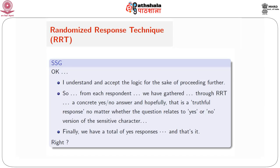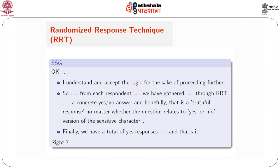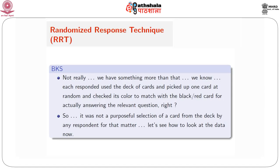I understand and accept the logic for the sake of proceeding further. So from each respondent we have gathered, through Randomized Response Technique, a concrete yes or no answer — and hopefully that is a truthful response, no matter whether the question relates to the yes or no version of the sensitive character. Finally, we have a total of yes responses. Not really — we have something more than that. We know each respondent used the deck of cards, picked up one card at random, and checked its color to match with the master black or red card for actually answering the relevant question. It was not a purposeful selection of a card from the deck. Let us see how to look at the data now.